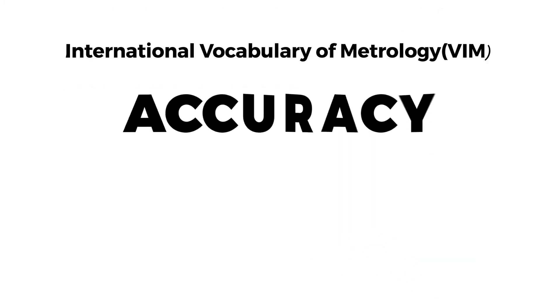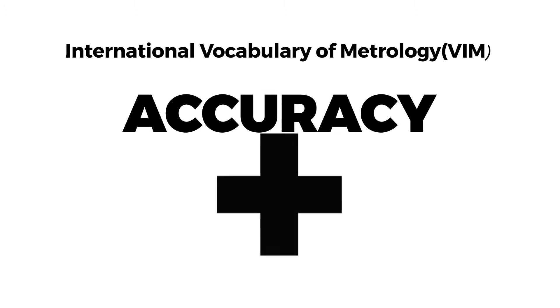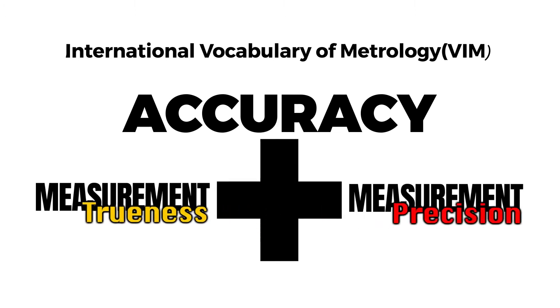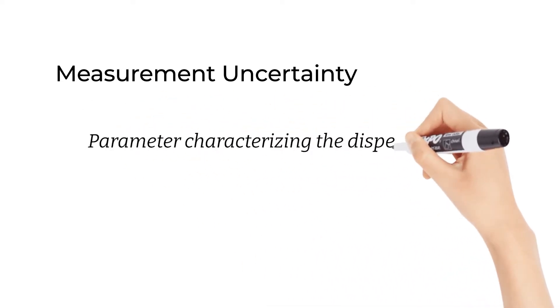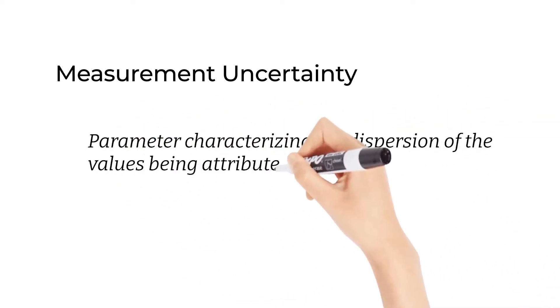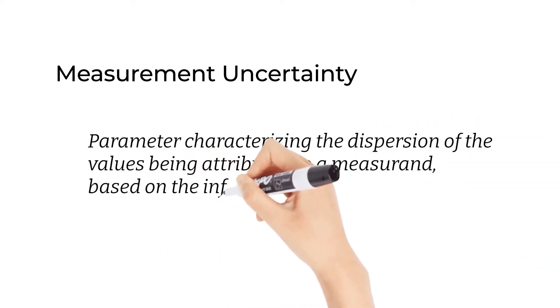The VIM further states that accuracy can be interpreted as the combination of measurement trueness and measurement precision. Measurement uncertainty is the parameter characterizing the dispersion of the values being attributed to a measurand based on the information used.